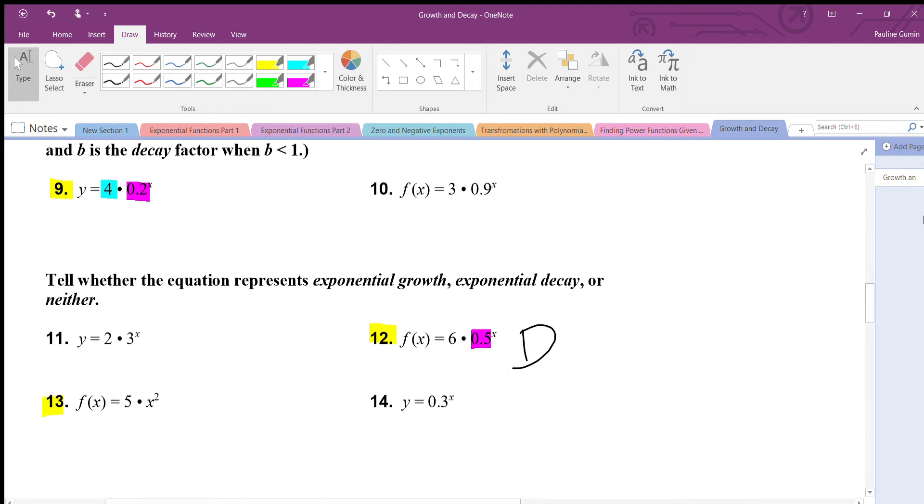Number thirteen. This one's funky. Take a look at this, it's x squared. The exponent for exponential functions should be the variable. So it shouldn't be x to the power of two, it should be something like two to the power of x. That's N for neither.